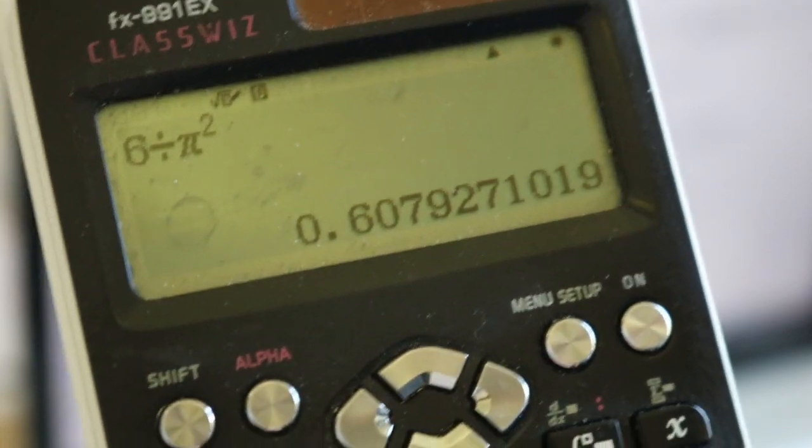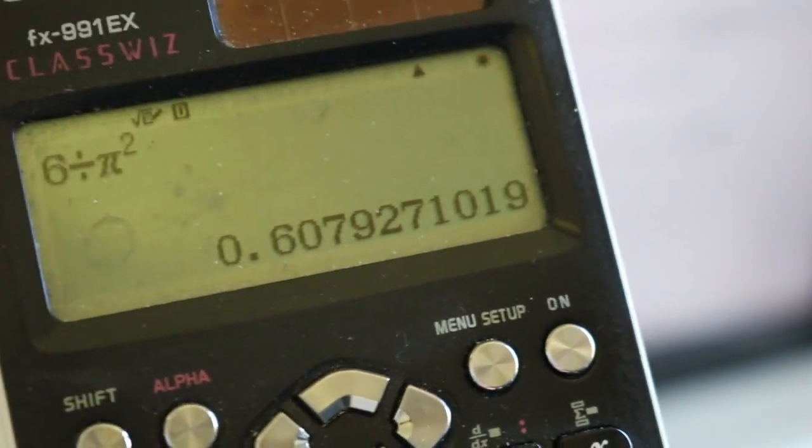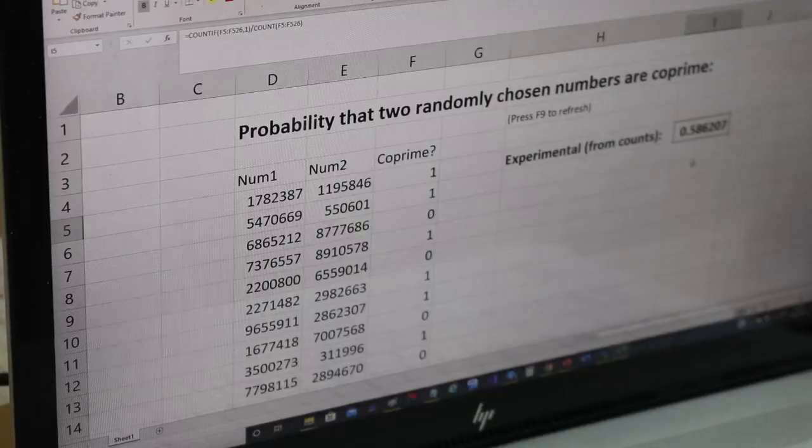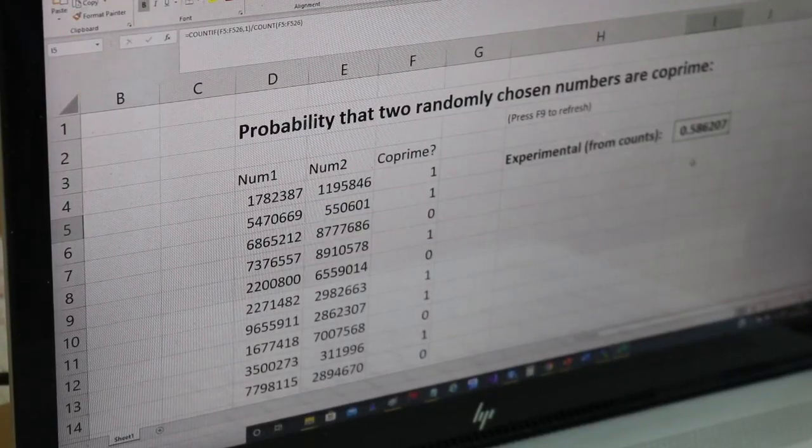Now if I do 6 over pi squared on my calculator, you can see that theoretical probability I should get does match the experimental probability really nicely.